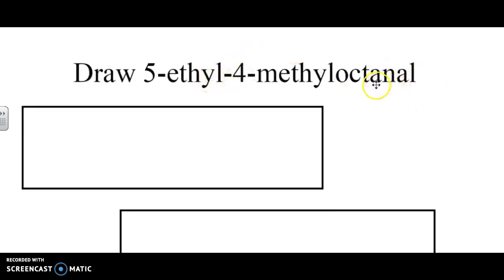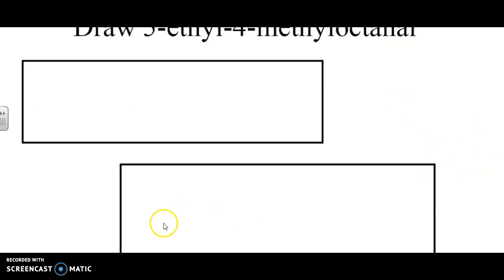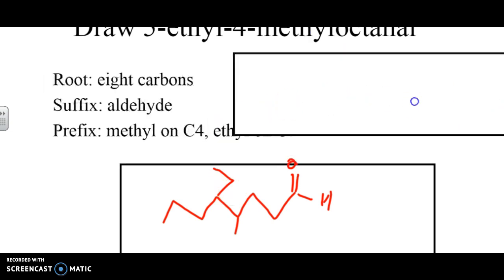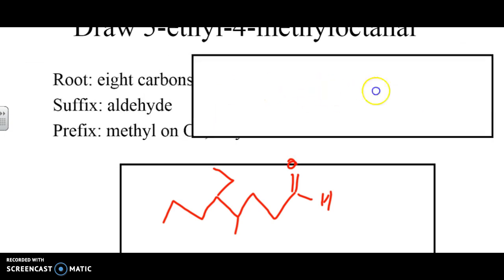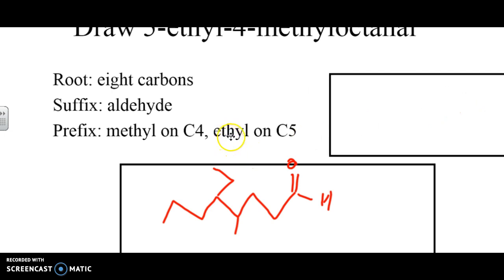If we want to draw 5-ethyl-4-methyl octanal, well, octanal means we've got eight carbons. So there's our eight-carbon chain. The ending is going to be right here. Could it be on the other end? Absolutely. But we're going to arbitrarily put that there. So there's our octanal. Now, we can see this is spot one, two, three, four. At spot four, we have to do a methyl group, and at spot five, we have to do an ethyl group. So that would be one way we could draw this. If we break it down, we know the root's going to have eight carbons. It's going to be an aldehyde, so therefore it has to be al. And we have to put a methyl on C4 and an ethyl on C5.